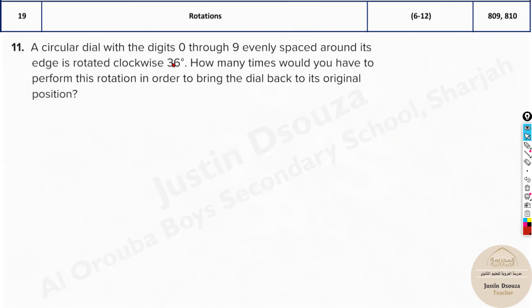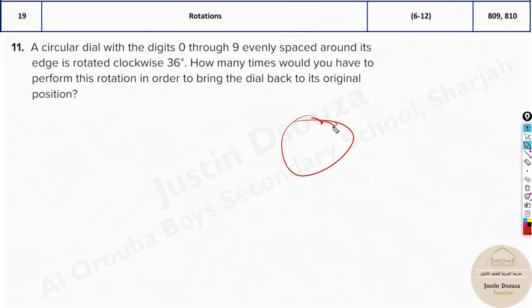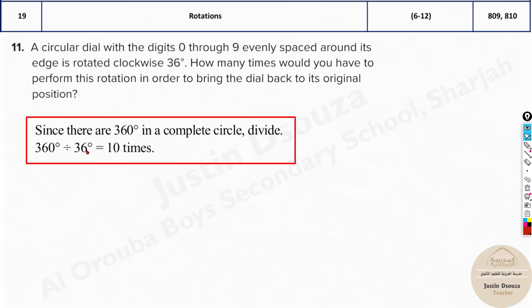A circular dial with digits 0 through 9 evenly spaced is rotated clockwise by 36 degrees. How many times must you perform this rotation to return it to its original position? Each rotation is 36 degrees, and a full circle is 360 degrees. So 360 ÷ 36 = 10. You need 10 rotations.